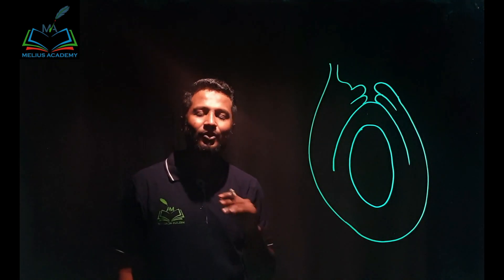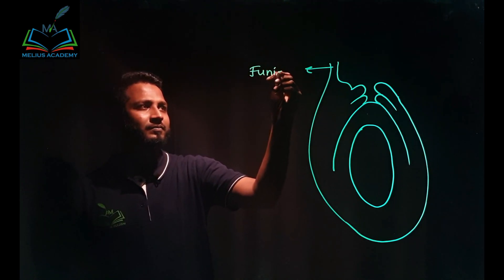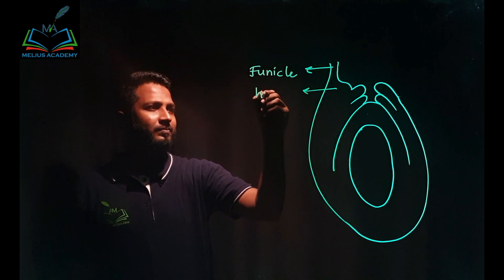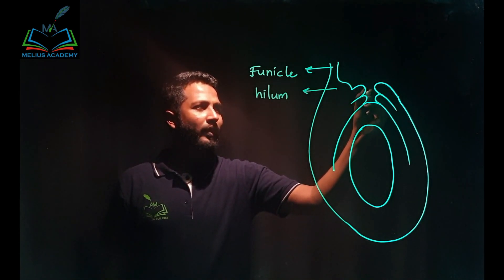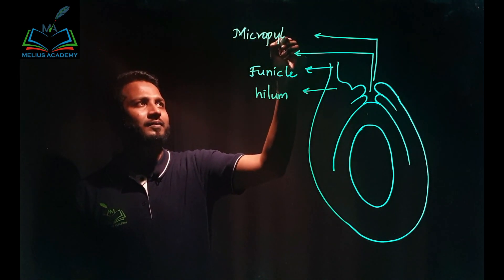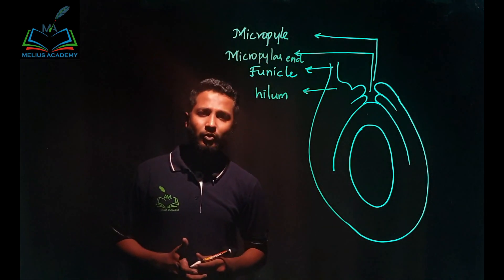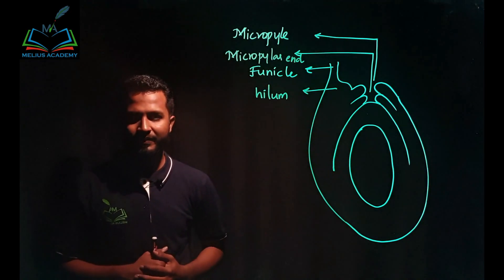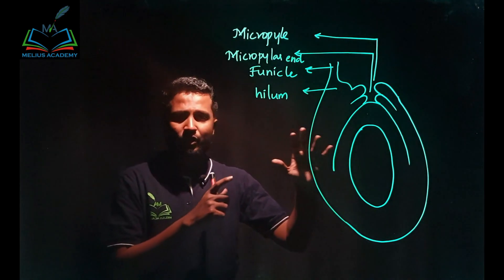That completes the diagram — a very simple diagram. But if you do not label it, you don't get any marks. According to the PU board — pre-university board in Karnataka — they give half a mark for each labeling. So we need at least 10 labelings. If we miss even a single labeling, half a mark is reduced. Make sure you remember all 10 labelings and every part is accurately labeled.